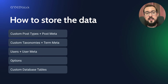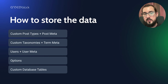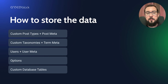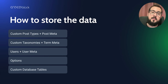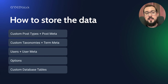Now the next question is: what tools do we have to store data? In WordPress these options are available: custom post types plus post meta, then custom taxonomies plus term meta, then users plus user meta, then options, and finally custom database tables.